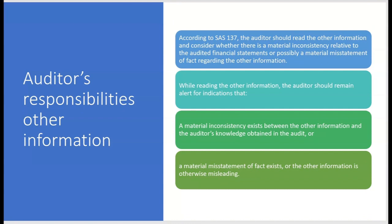The auditor is responsible for reading the other information and considering whether there's a material inconsistency relative to the audited financial statements, or possibly a material misstatement of fact regarding the other information. While reading the other information, the auditor should remain alert for indications that a material inconsistency exists between the other information and the auditor's knowledge obtained in the audit, or that a material misstatement of fact exists, or that the other information is otherwise misleading.